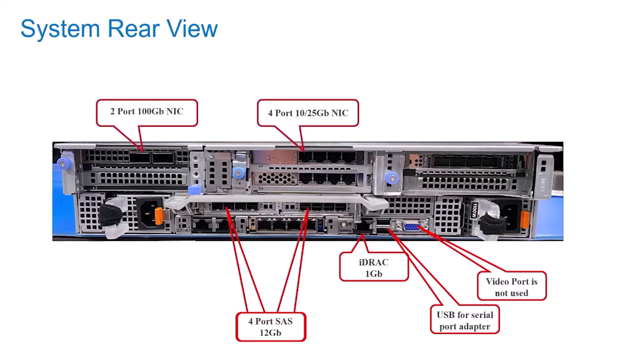There are six full-height PCI slots that can be configured with a variety of IO card options such as 4-port 10 GB Base-T, 4-port 10 or 25 GB SFP28, 2-port 100 GB QSFP, or 4-port 32 GB Fiber Channel. Note that if the system is configured for high availability, slot 7 must contain a 10 or 25 GB NIC. This NIC is used to link the two HA controller nodes and uses all four ports — two for heartbeat and two for RDMA sync of the SDPM.